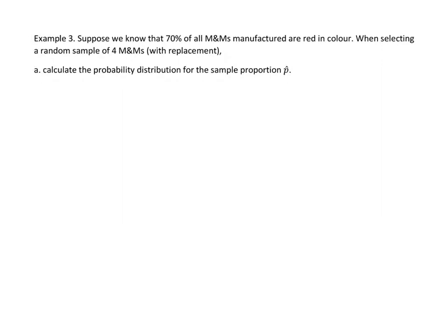Here's something with a little bit more oomph. We know that 70% of all M&Ms manufactured are red in colour. When selecting a random sample of 4 M&Ms with replacement, that's helpful to know, calculate the probability distribution for the sample proportion p hat. So what you actually start off with is recognising that x is a binomial distribution, or binomially distributed variable, where x is the event we choose a red M&M.